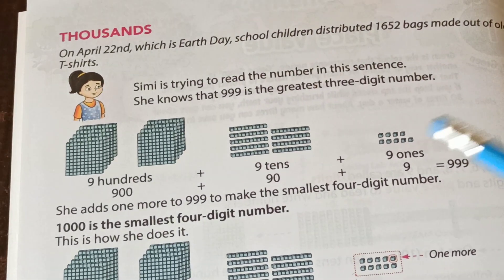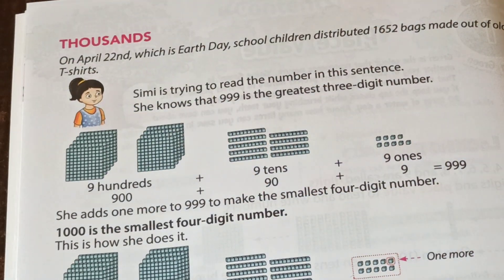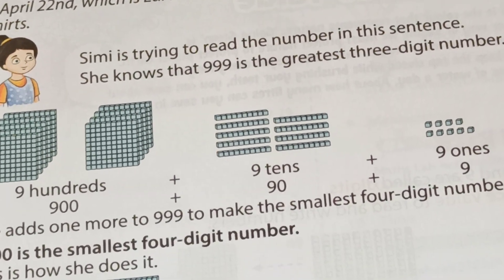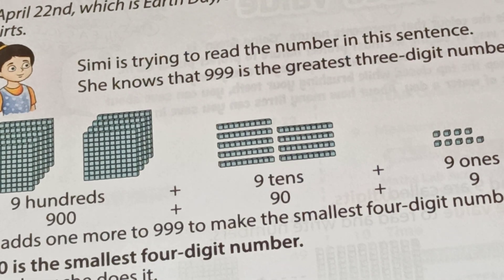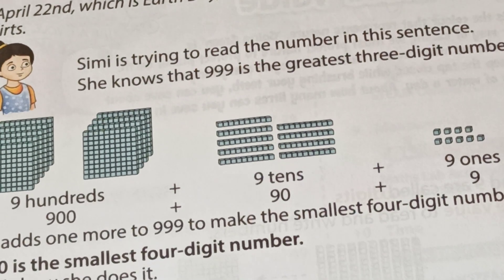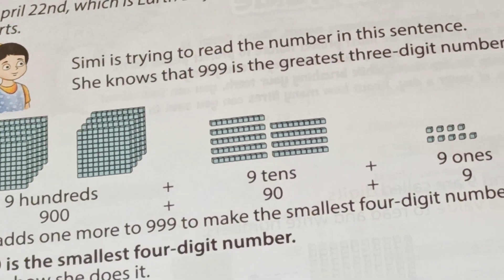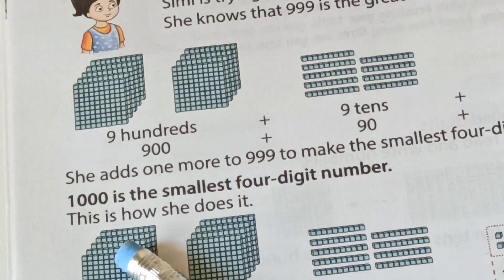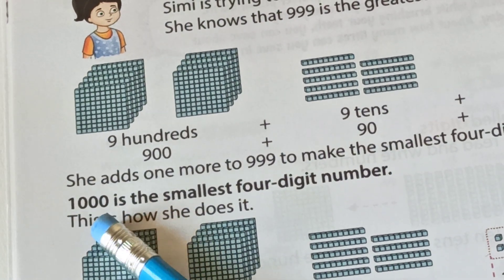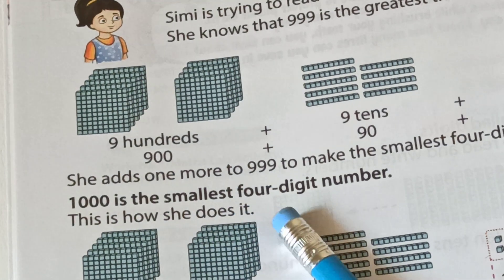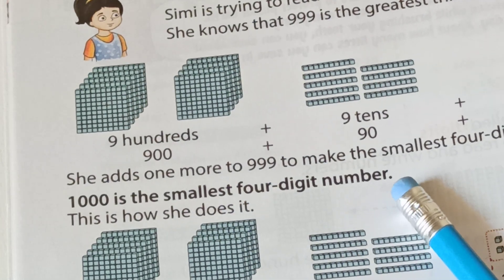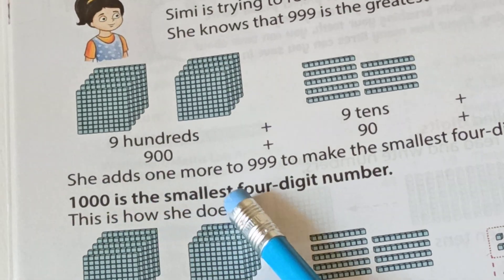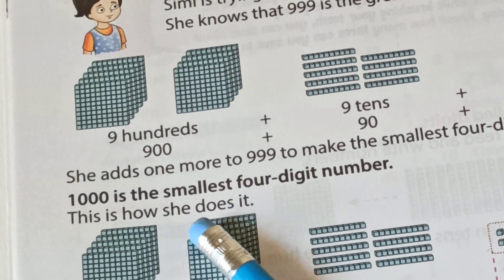Very good. Simi adds one more to nine hundred ninety-nine to make the smallest four-digit number. Which is the smallest four-digit number? Let's learn. One and triple zero — 1,000. Thousand is the smallest four-digit number. Kids, please remember this — it is very important.